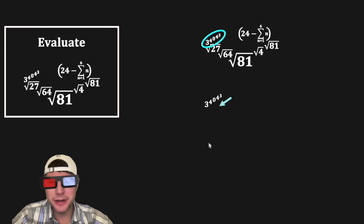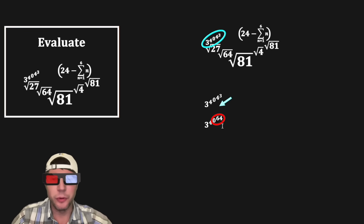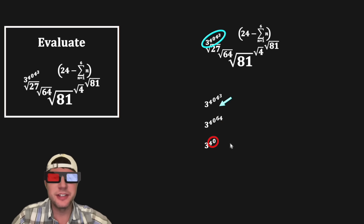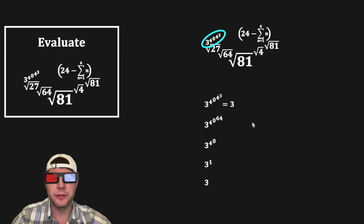Let's evaluate this one. First we focus on 4 to the 3, which gives us 64. Then we do 0 to the 64, which is 0. Then we do 4 to the 0, which is 1. And then 3 to the 1 is equal to 3. So this whole power tower is equal to 3.